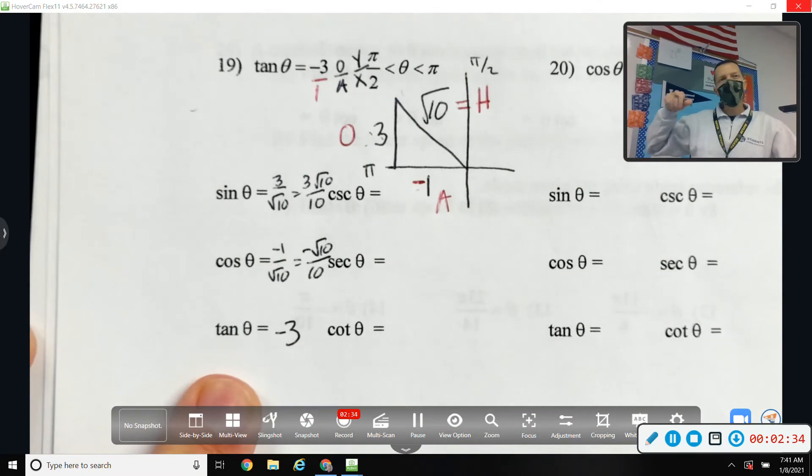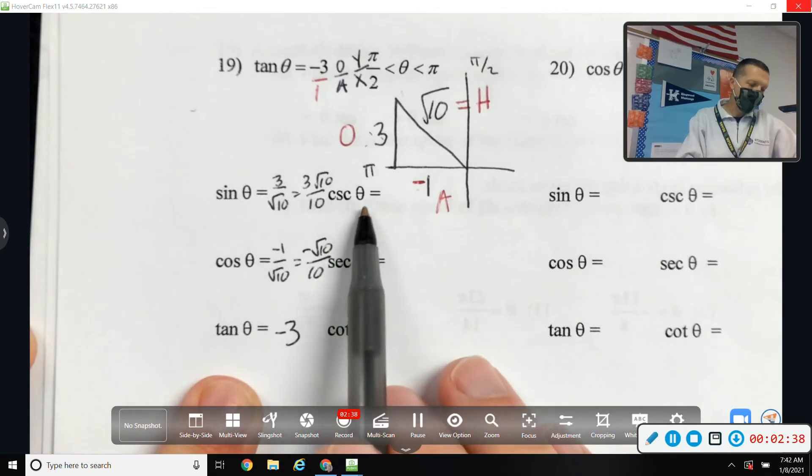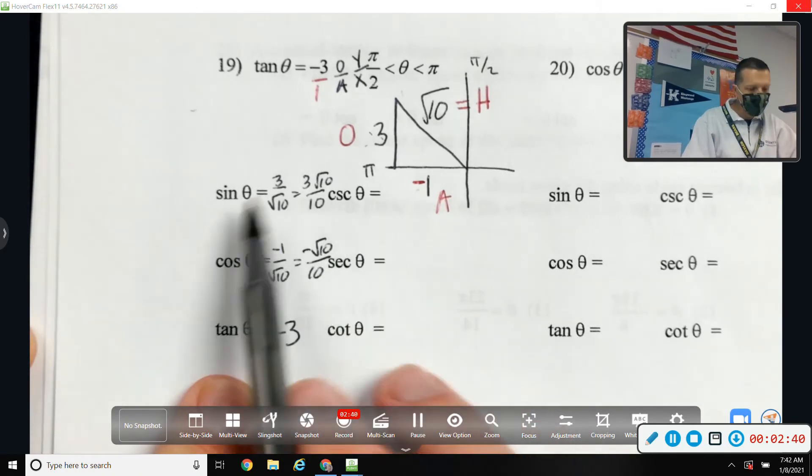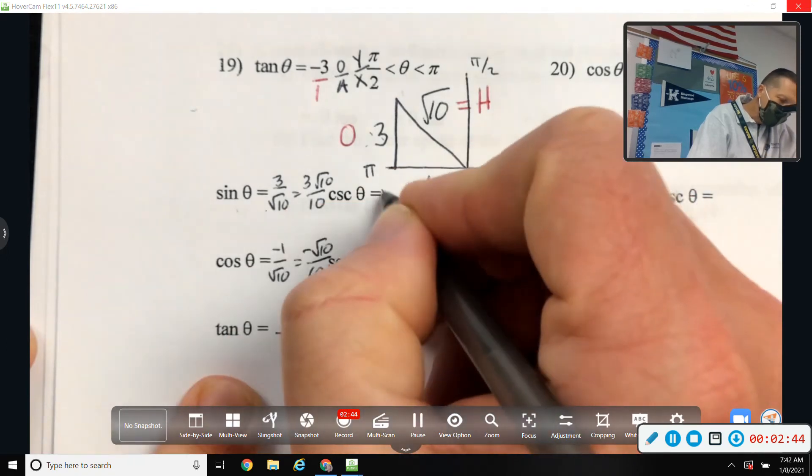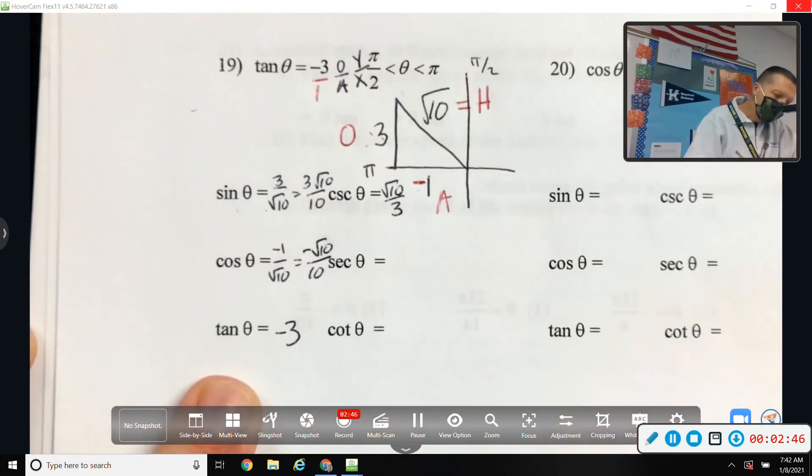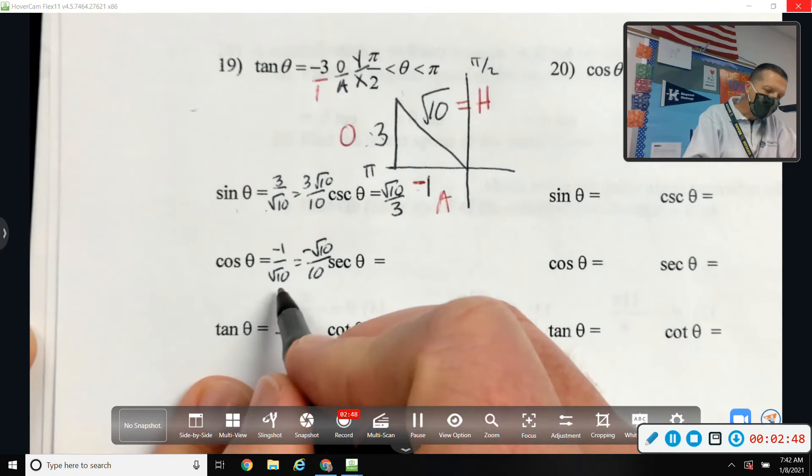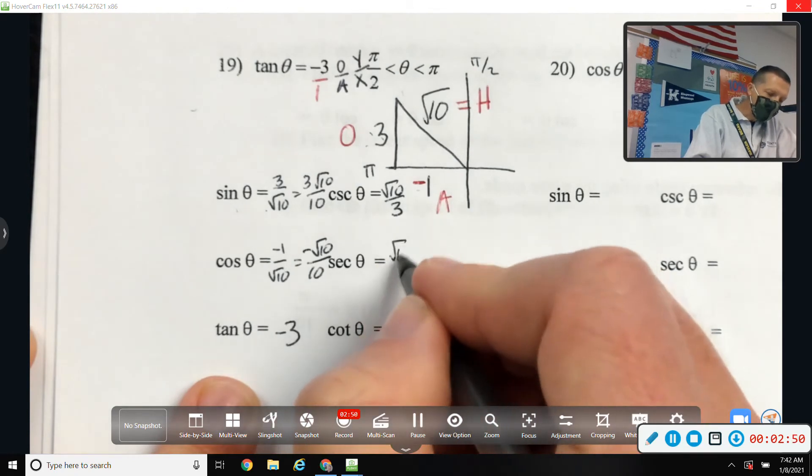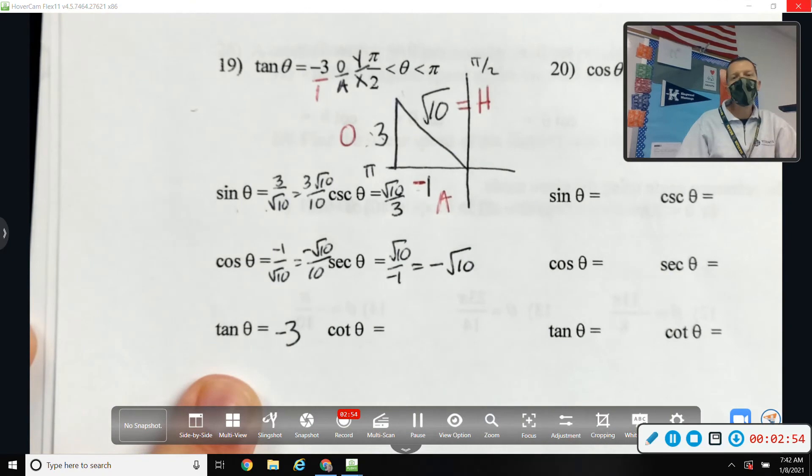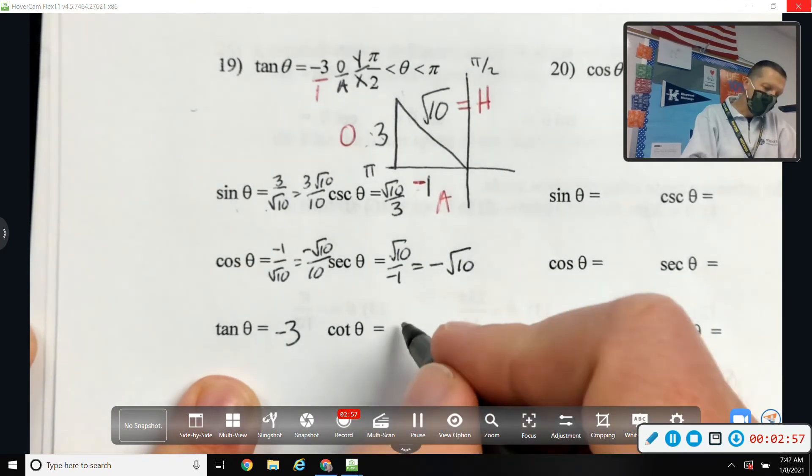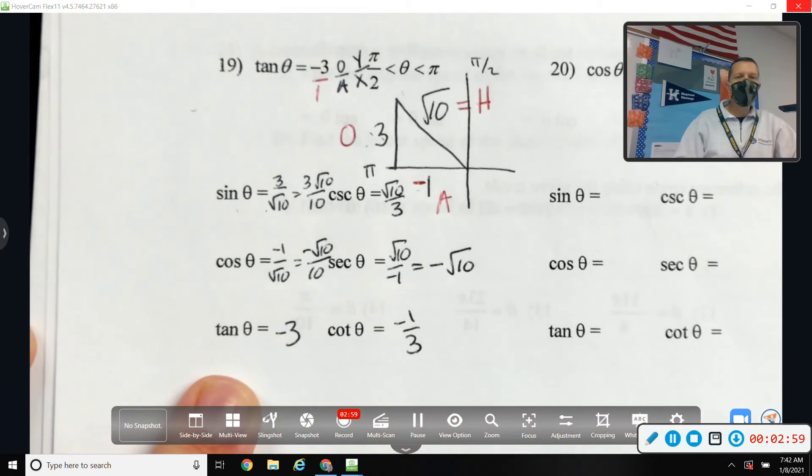And then the flips. Remember, we always do the others as flips. I don't even remember what they are in terms of letters. I remember who they're partnered with and just flip them over. So if I flip sine, root 10 over 3. If I flip cosine, I get root 10 over negative 1. But why don't I just write that as negative square root of 10? And then if I flip negative 3, I get negative 1 third.